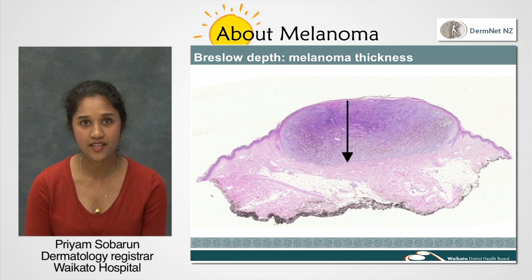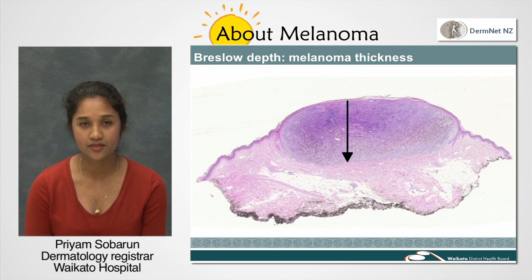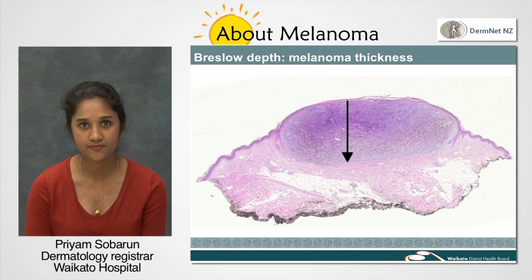The Breslow depth is measured in millimetres from the top of the granular cell layer of the epidermis to the deepest part of the tumour. If there is ulceration, then the measurement is taken from the base of the ulcer to the deepest part of the melanoma.